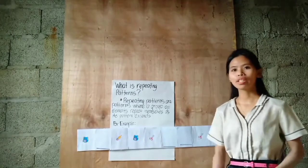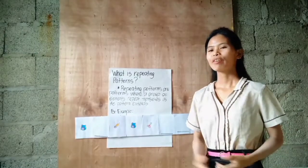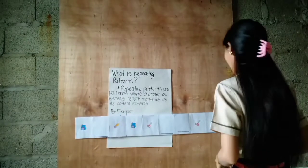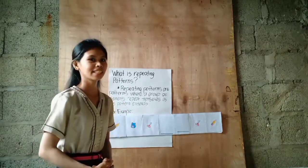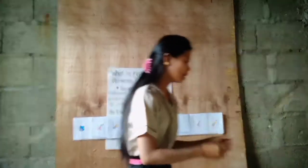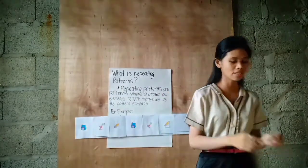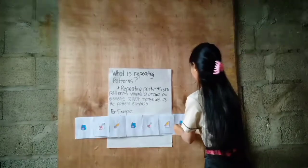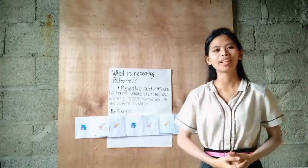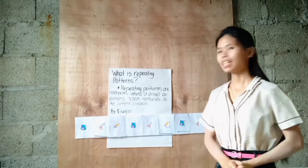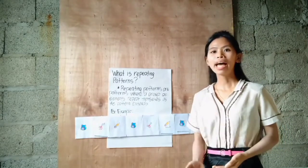Now, how about this set of flashcards? What do you think is the missing object in the first line? Very good — it's a scissor. How about the second line? Very good — it's a pencil. How about the third line? You get the idea — it's a bag. So what do you think is the pattern being repeated in this set of flashcards? Very good — it's a bag, scissor, pencil, bag, scissor, pencil, bag, scissor, and pencil.